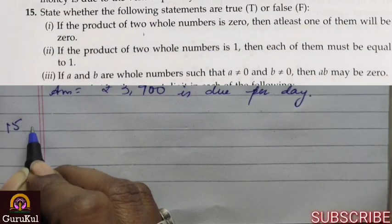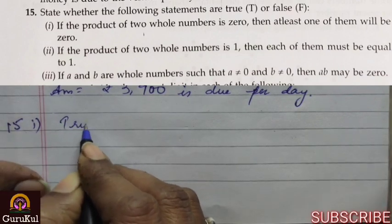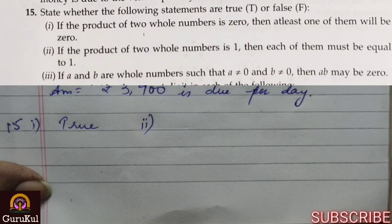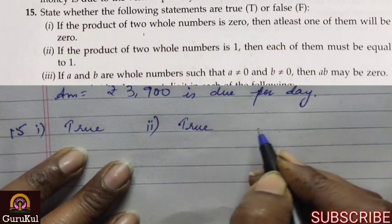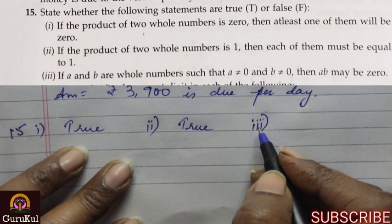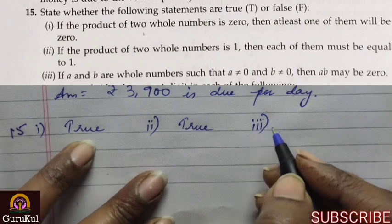Question number 15. We have to state whether the following statements are true or false. Number 1: If the product of 2 whole numbers is 0, then at least 1 of them will be 0. True. Second part: If the product of 2 whole numbers is 1, then each of them must be equal to 1. True. Number 3: If A and B are whole numbers such that A is not equal to 0 and B is not equal to 0, then AB may be 0. This is false.